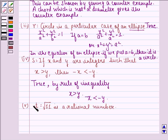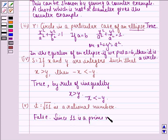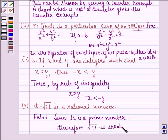Now, the fifth statement is statement T, that is, square root of 11 is a rational number. Our answer is false. Since 11 is a prime number, therefore root 11 is irrational, because square root of a number is rational only when the number is a perfect square, and 11 is not a perfect square, so it is prime. So square root 11 is irrational.